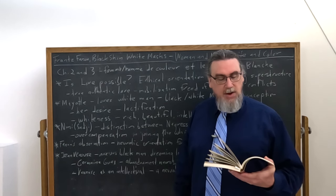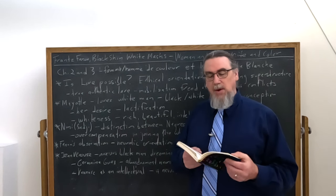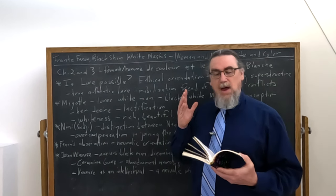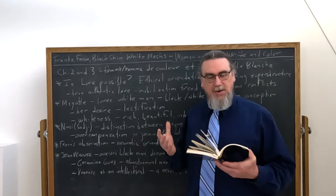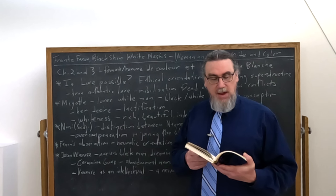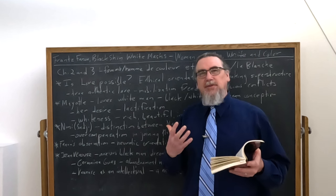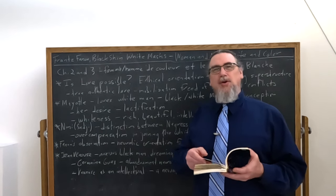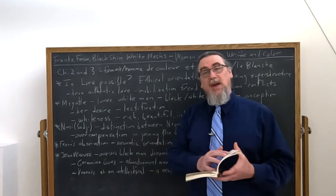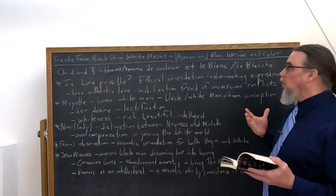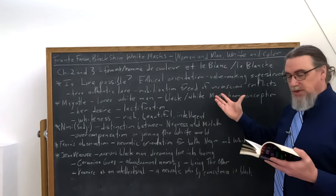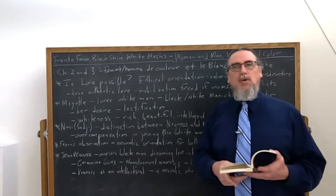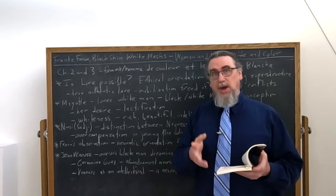So, this is, as he says, one day a woman named Mayotte Capetia sat down to write 202 pages, her life, in which the most ridiculous ideas proliferated at random. The enthusiastic reception that greeted this book in certain circles forces us to analyze it. And he says, this is actually cut-rate merchandise, a sermon in praise of corruption. Now, why is that the case? Because Mayotte is in love with this white man. And as Fanon says, to whom she submits in everything, he is her lord. She asks nothing, demands nothing except a bit of whiteness in her life.